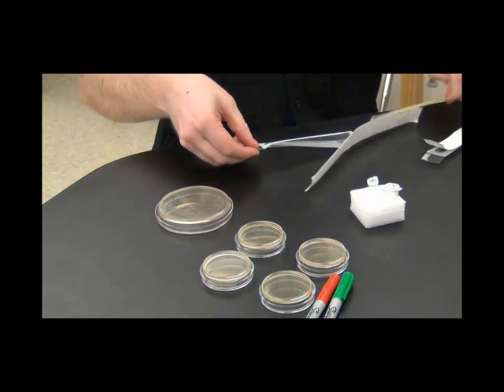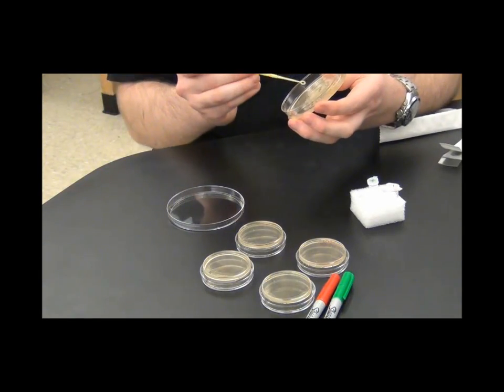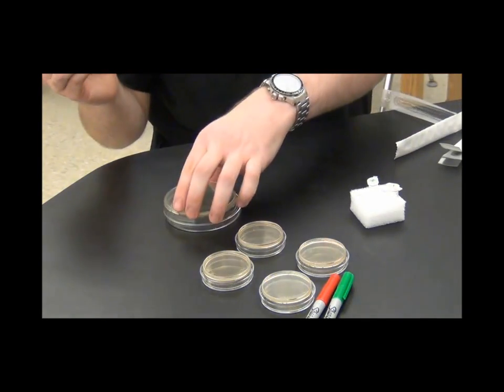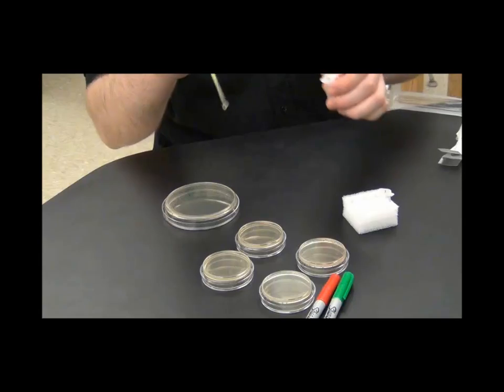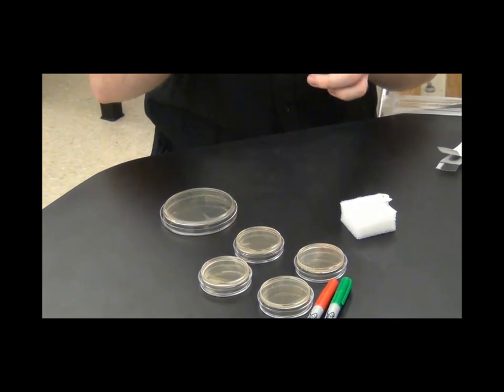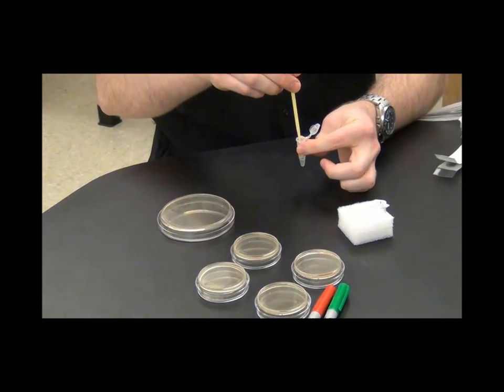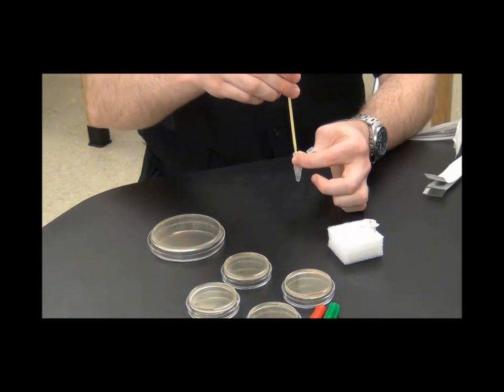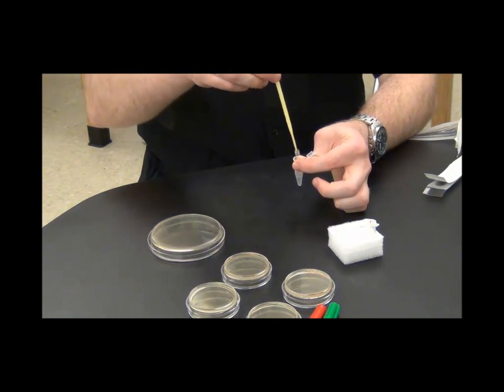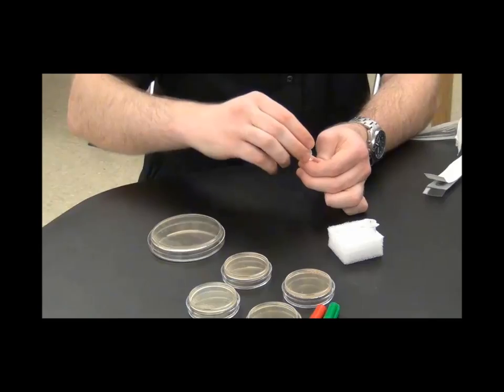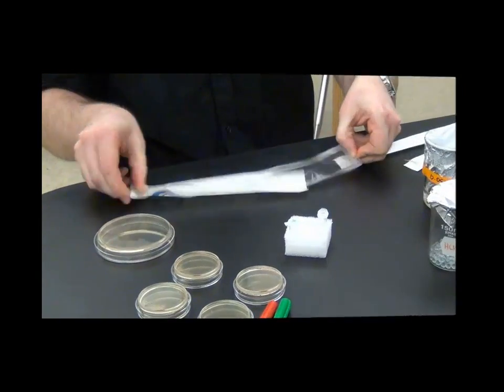You're also going to use your second loop to get another colony. You just want to scrape the surface of the agar. Don't gouge it and punch into the agar. And you're just going to add the bacteria to the other tube. Again, twist to make sure the bacteria falls off. You should see a little clump of white in the tube. And throw your loop into the disposal container.